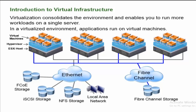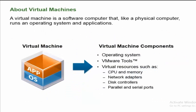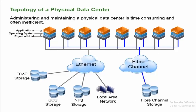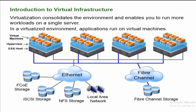In the physical world, you install an operating system directly on a server. When an application needs to execute a process on the CPU, it requests from the operating system, which transfers the request to the hardware. Even with dual booting, you are using only one operating system at a time. With virtualization, you have the ESXi hypervisor installed on top of the hardware, and on top of it you install multiple operating systems in the form of virtual machines.